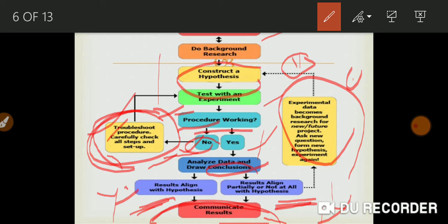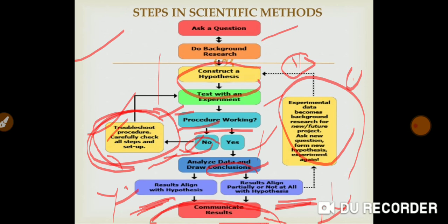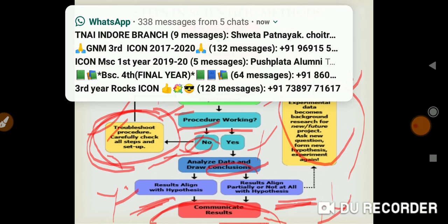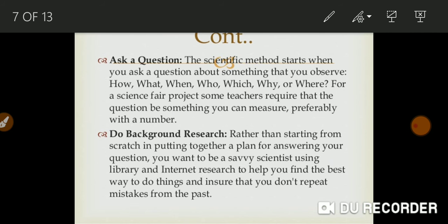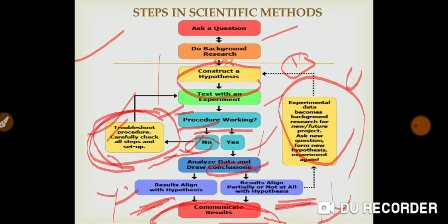If the result aligns partially or not at all with the hypothesis, we go back and repeat the process. So this was all about the steps of the scientific method - how we acquire knowledge according to the scientific method. These are the methods of acquiring knowledge in scientific methods, and these are the descriptions of all the steps.